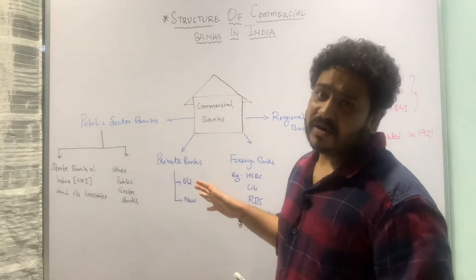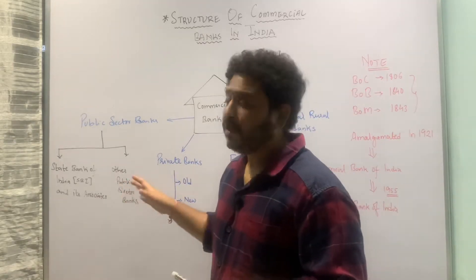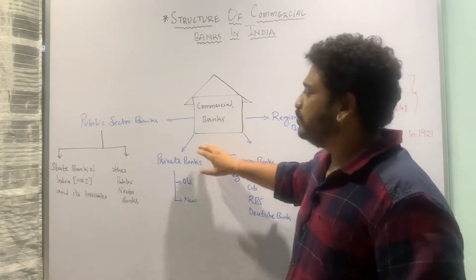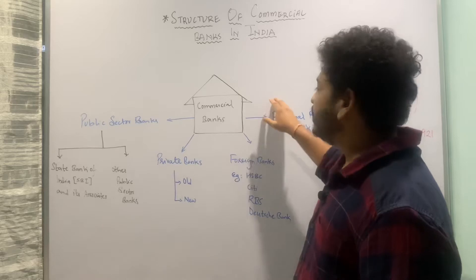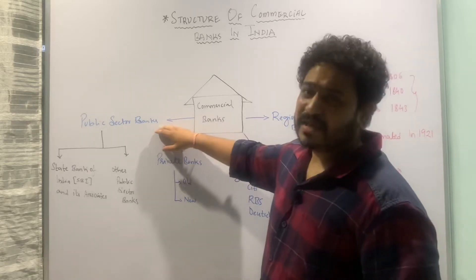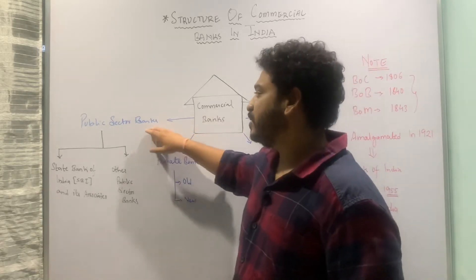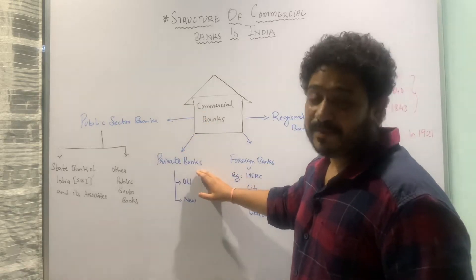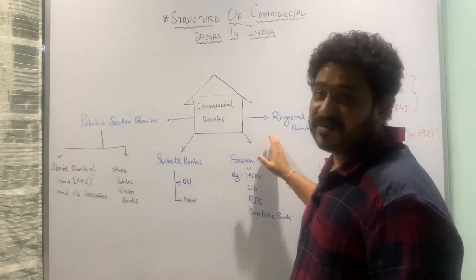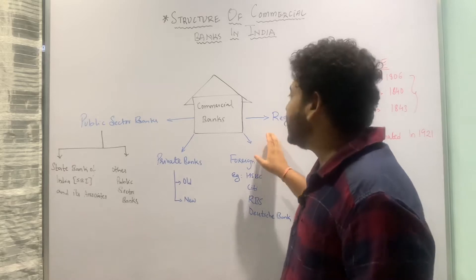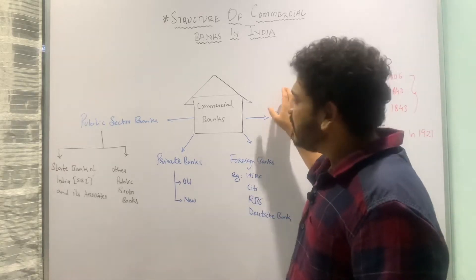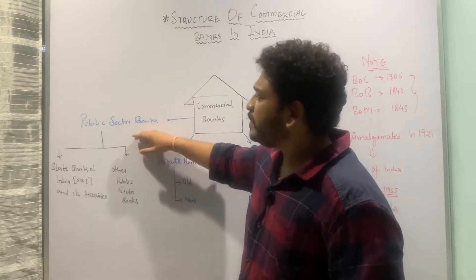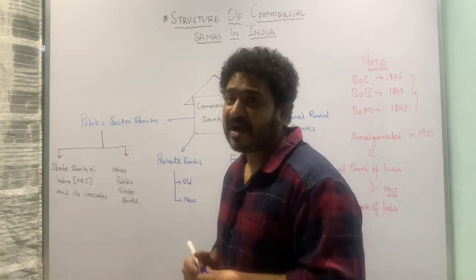The commercial banks have been classified into four distinct pillars. The first pillar is represented by the public sector banks, the second by the private sector banks, then we have something called foreign sector banks, and then the regional rural banks. Let us now look at public sector banks first.